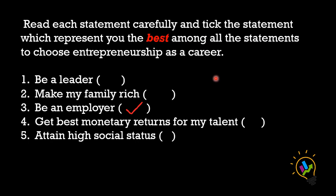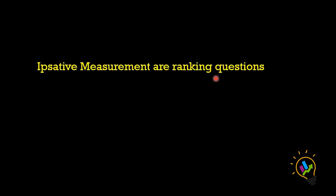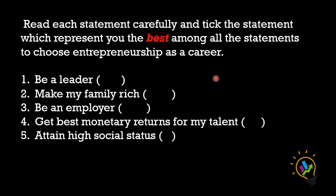In the earlier case, we were giving each statement a response from one to five, but here we are comparing one statement to the other. The respondent in this case selected 'be an employer' — many entrepreneurs say they want to be their own boss. This is the first trait the respondent identifies with. This is what we call ipsative measurement. Ipsative measurements are ranking questions in which among the five statements only one statement is selected.